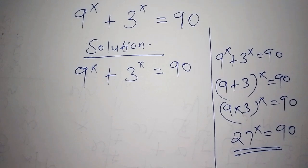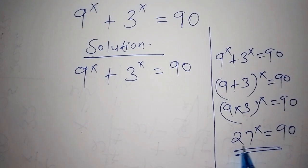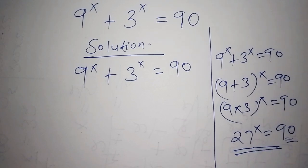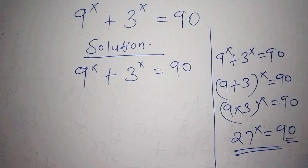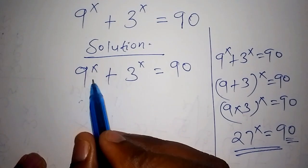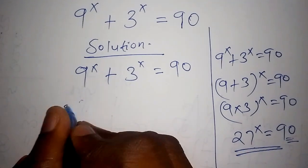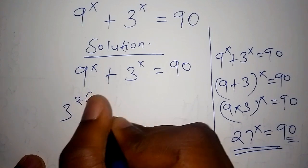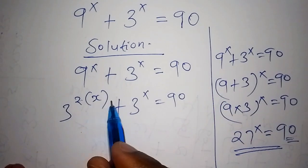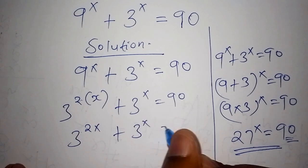So let me work out this problem using the quadratic equation, because finding the index relationship between 27 and 90 is very difficult. We want to express 9 to the power of x as 3 squared to the power of x, which gives us 3 to the power of 2x plus 3 to the power of x equals 90.